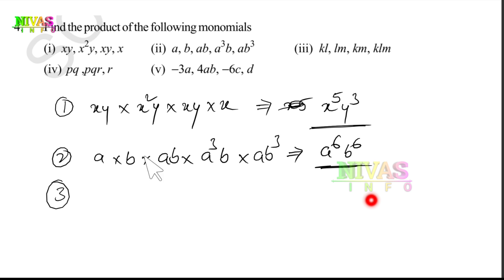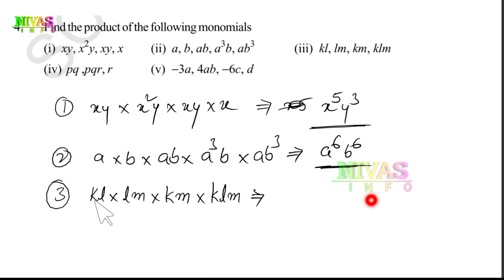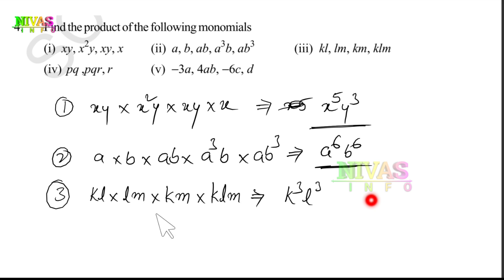Third one: KL into LM into KM into KLM. Counting K: K power of 3. Counting L: L power of 3. Counting M: M power of 3. So the answer is K³L³M³.